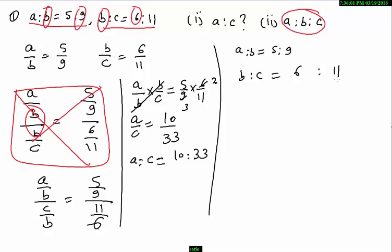We need to make B equal to 9 in the second ratio as well. To do that, multiply B to C by 9 by 6. So B is to C becomes 9 is to 99 by 6.